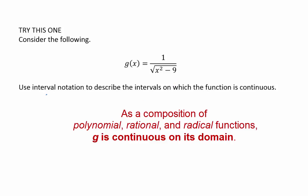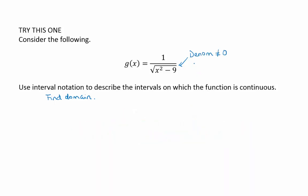To find the domain, since it's a rational function, the denominator is not allowed to be 0. What that means is that x squared minus 9 is not allowed to be 0.